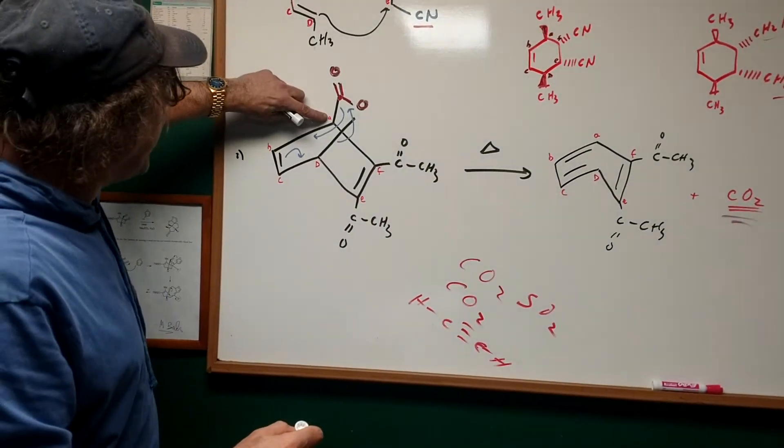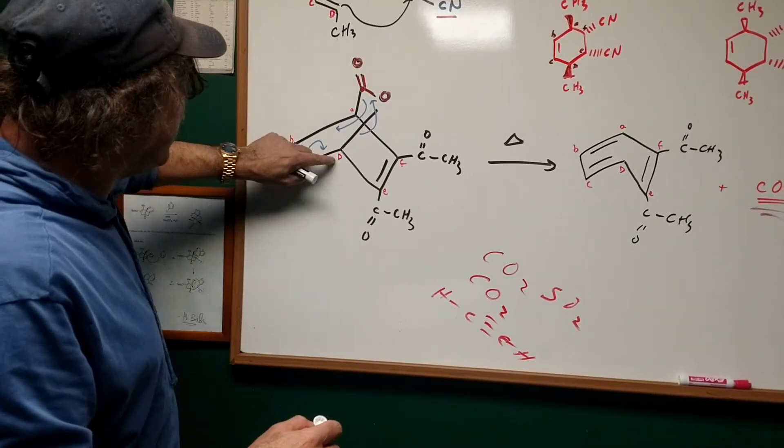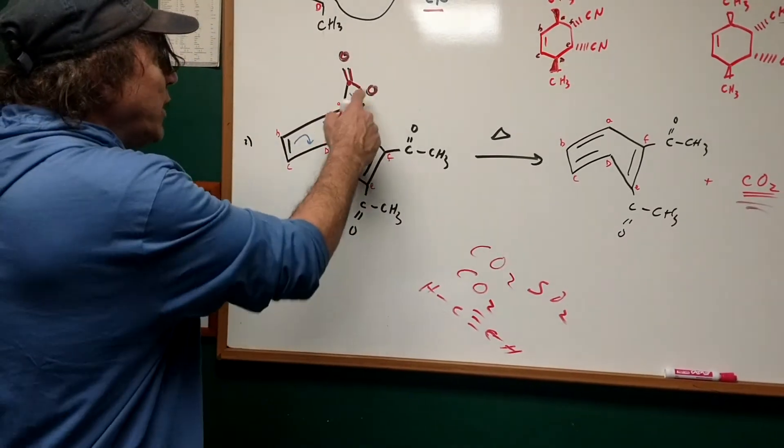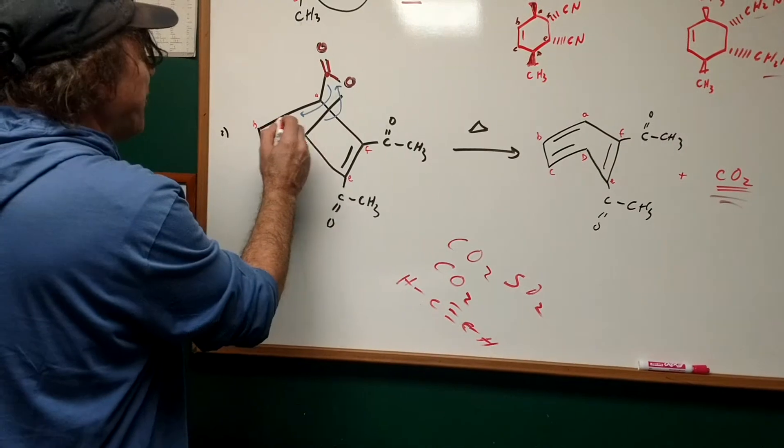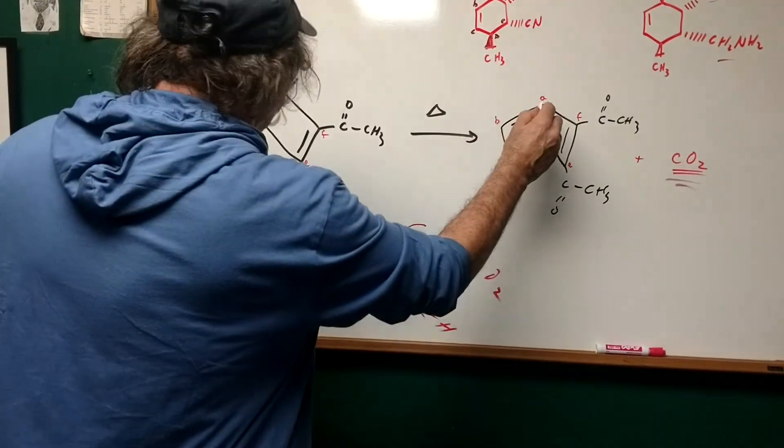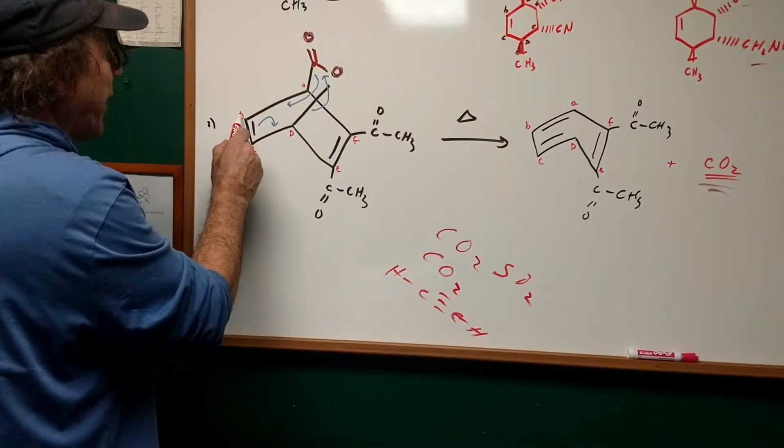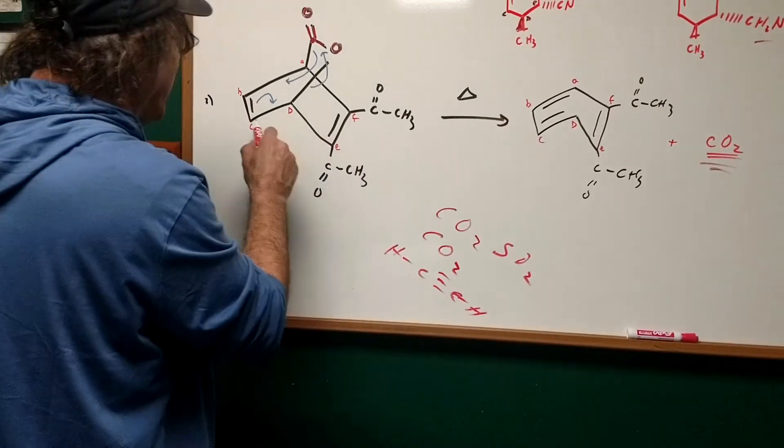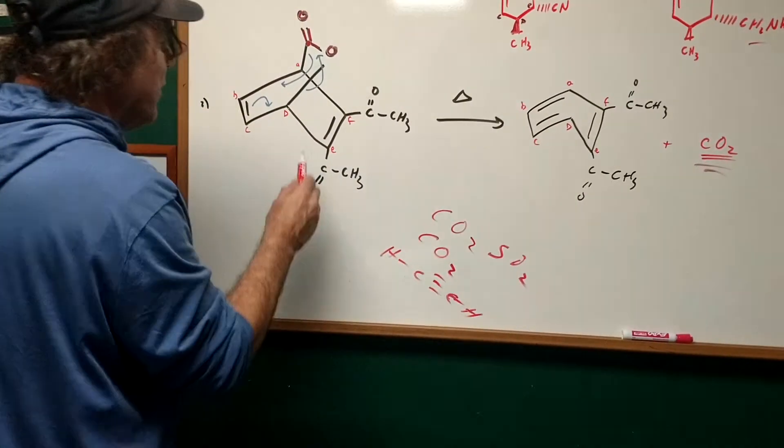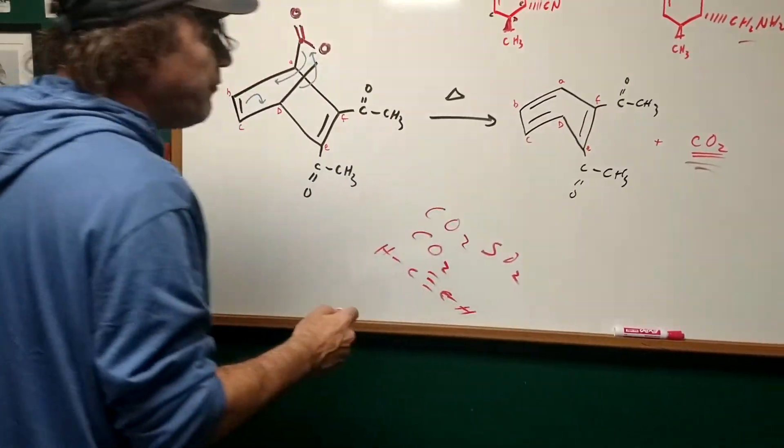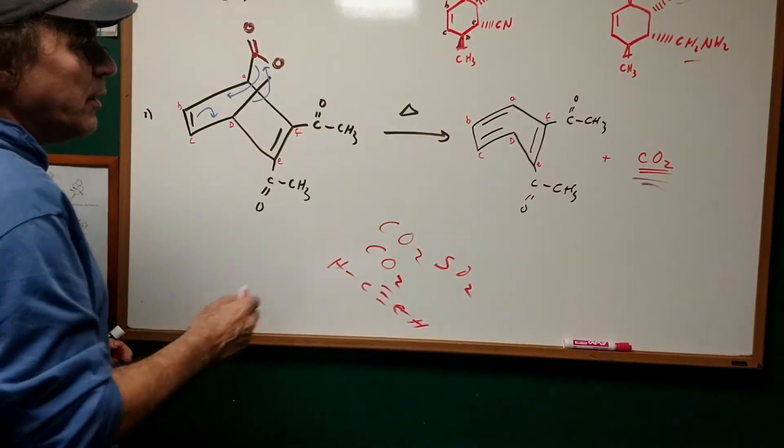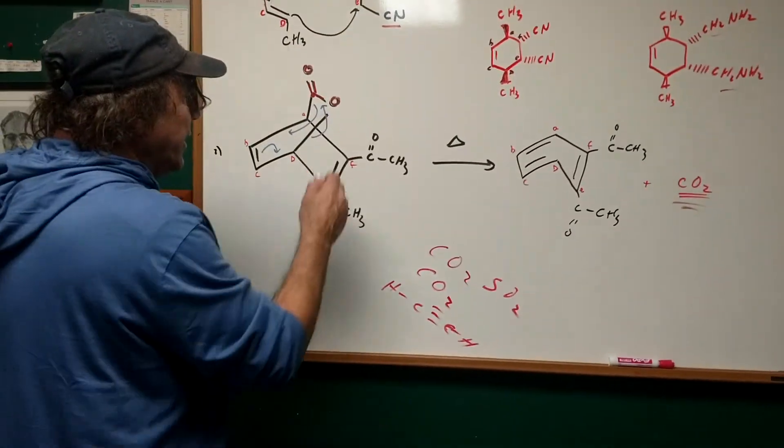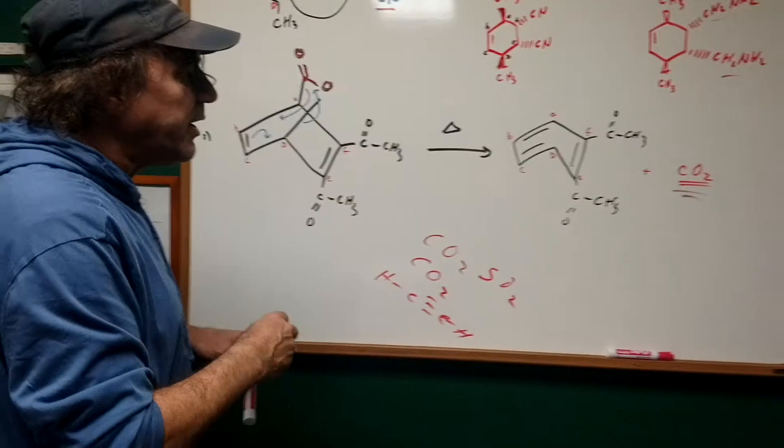Now, watch the numbers. There's my A, B, C, D, E, F. Once CO2 is off, I then put the double bond between A and B. Notice I labeled it for you. Then B to C lost the double bond, and the double bond moved from C to D. And then there's my E to F. I hope I've convinced you that this is the same as this minus the CO2.